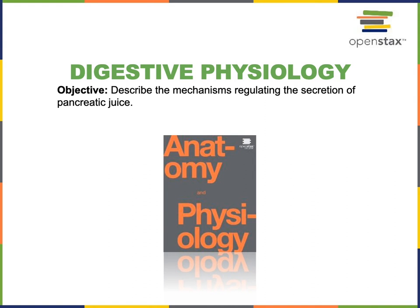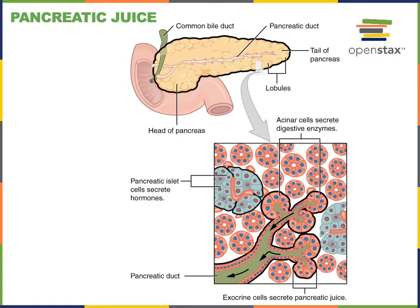In this video, I will describe the mechanisms regulating the secretion of pancreatic juice. The pancreas is an unusual organ in that it is both an endocrine gland as well as an exocrine gland. The endocrine functions of the pancreas result from pancreatic islets that contain alpha cells that secrete the hormone glucagon and beta cells that secrete the hormone insulin, and these hormones are major regulators of blood glucose concentration.